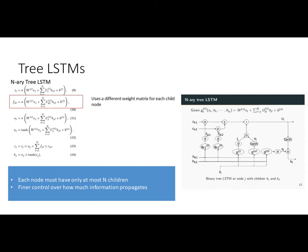This can potentially be applied to something like a dependency tree. The other way of handling different child nodes is the N-ary Tree LSTM, which is very similar to the child-sum except you use a different weight matrix for each child node. Instead of just summing up the hidden states, you multiply them by a different weight matrix. This means you can have at most N children per node, but it gives you much finer control over how information propagates.